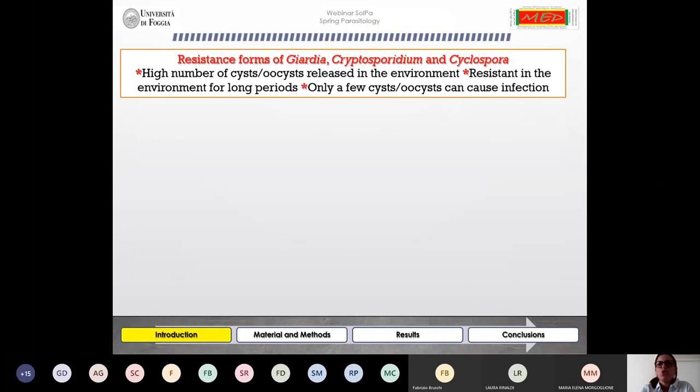The resistance forms of Giardia, Cryptosporidium, and Cyclospora, called cysts and oocysts respectively, are released in very high numbers in the environment where they remain resistant for very long periods. On the other hand, it's important to point out that only a few cysts or oocysts are necessary to cause infection, which is very important for the potential spread of disease.